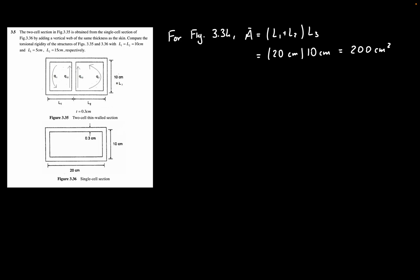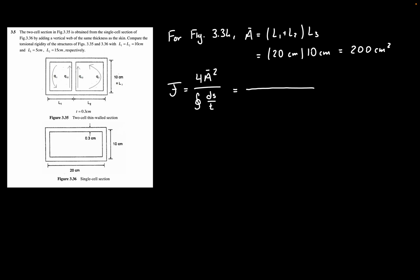We can use Bredt's equation to calculate the torsional constant J, which equals 4 times A-bar squared divided by the closed integral of ds divided by t. Since we have the same thickness for every single wall, this closed integral just sums up the perimeter. We can pull t up to the numerator, giving us 4A-bar squared times thickness divided by the perimeter, which is 2 times L1 plus L2 plus L3.